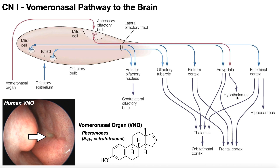For humans, this is certainly subconscious — no human is consciously aware of these pheromones. But for many other organisms like cats and dogs, there is some conscious awareness. You've probably seen a cat or dog sniff another's rear end — they're not actually sniffing the anus, but the apocrine glands in that area, which release pheromones. They can gather a lot of information about their fellow cats and dogs by doing so.